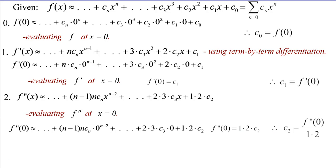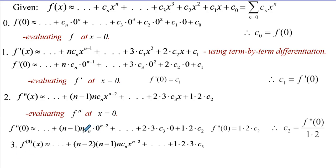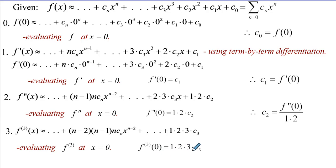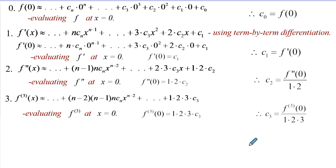Proceeding to the third differential coefficient, we differentiate again and evaluate at x = 0. We are left with the expression showing that the third differential coefficient evaluated at 0 is simply 3 factorial multiplied by c_3. Therefore, c_3 equals the third-order differential coefficient evaluated at 0, divided by 3 factorial.